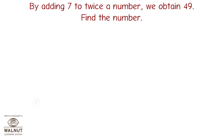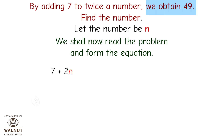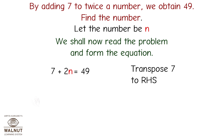By adding seven to twice a number, we obtain 49. Find the number. Let the number be n. We shall now read the problem and form the equation. By adding 7, that gives us 7 plus twice a number, that is 2n, we obtain 49, which gives us 7 plus 2n equals 49.